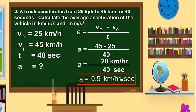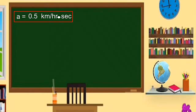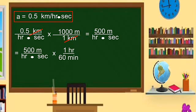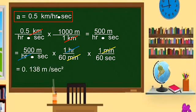Now, how do we convert that to meters per second squared? We have A equal to 0.5 kilometer per hour per second. Multiply by 1000 meters per kilometer to cancel kilometers, giving 500 over hour times second. Then multiply by 1 hour over 60 minutes to cancel hours, and by 1 minute over 60 seconds to cancel minutes. Multiplying 500 times 1 times 1 divided by 60 times 60 gives the answer: 0.138 meters per second squared.